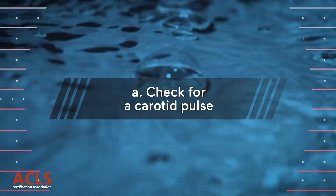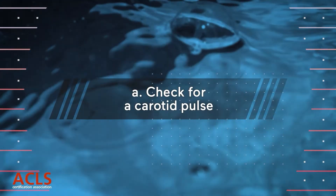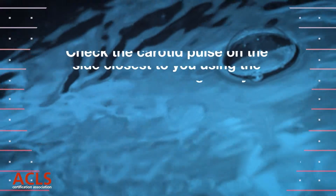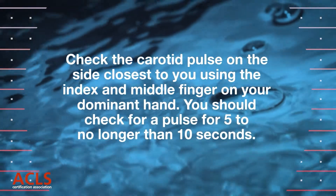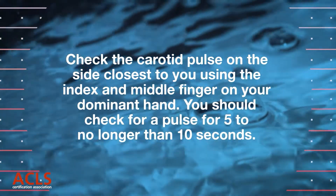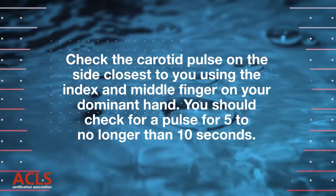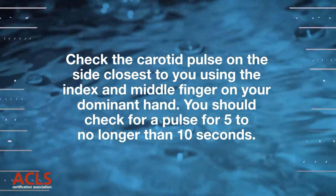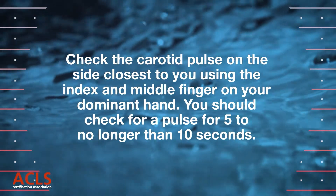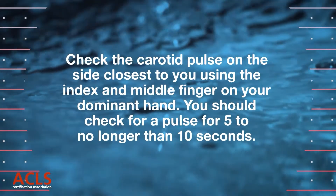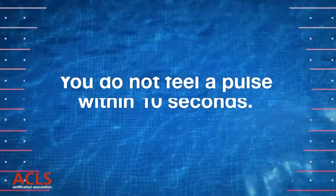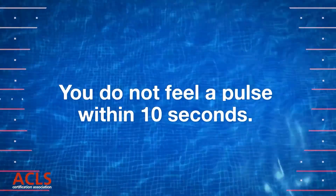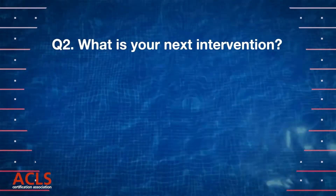Check for a carotid pulse. Check the carotid pulse on the side closest to you using the index and middle finger on your dominant hand. You should check for a pulse for 5 to no longer than 10 seconds. You do not feel a pulse within 10 seconds. What is your next intervention?